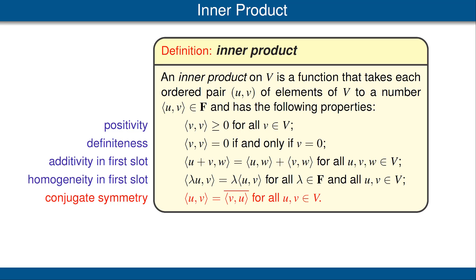Our last property in the definition of an inner product is called conjugate symmetry. It says that if we interchange the order of the two vectors, we get the complex conjugate of what we started with. Recall that the complex conjugate of a real number is just the real number itself. Thus, in the case where scalar field F is the field of real numbers, this property could be rewritten to say the inner product of u with v equals the inner product of v with u — in other words, when dealing with real numbers, the complex conjugate does nothing. However, it will matter when we are dealing with complex numbers. We leave it here so that we can have a single definition of inner product that works for both real and complex fields.